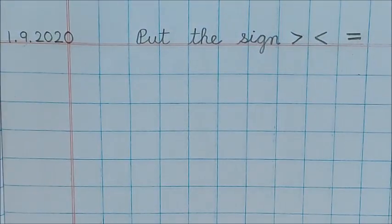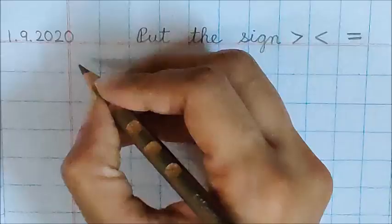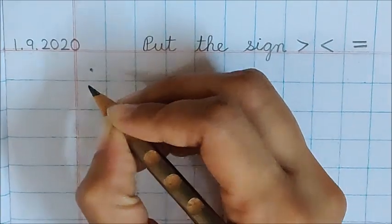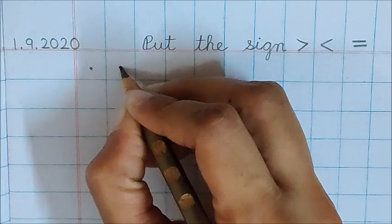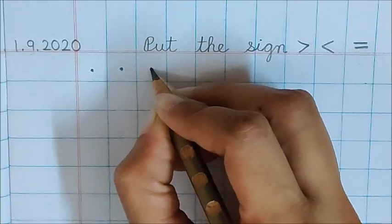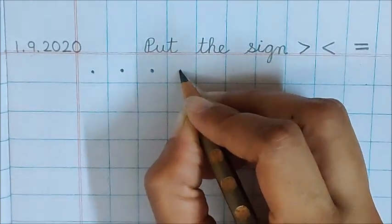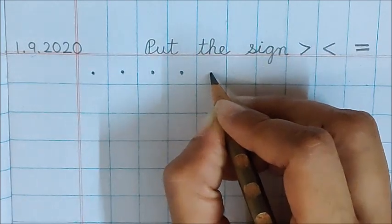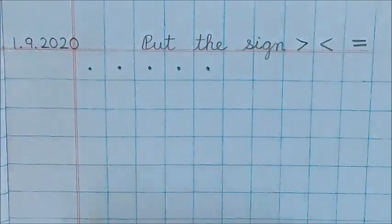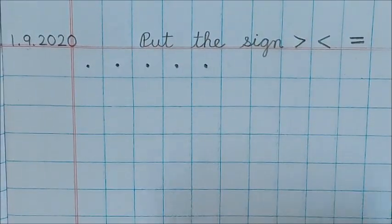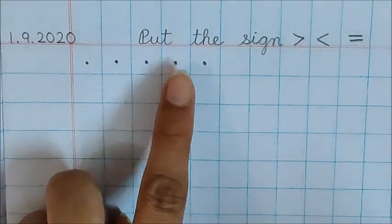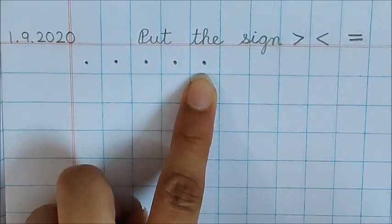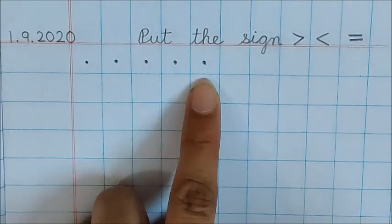Now, children, in the first box, put a dot. In the next box, again put a dot. Again put a dot. Again put a dot. And one more dot. Let us count, how many dots did we put here? 1, 2, 3, 4, 5. We have put 5 dots here.